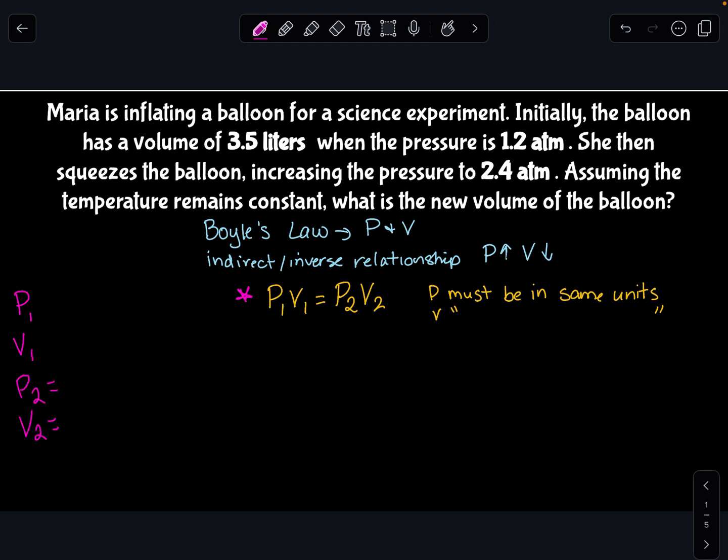So I know Boyle's Law has a P1, a V1, a P2, and a V2. And for all these gas law equations—Boyle's, Charles, Guy-Lussac's—you're always going to be given three of your four variables, and then you just solve for the missing.